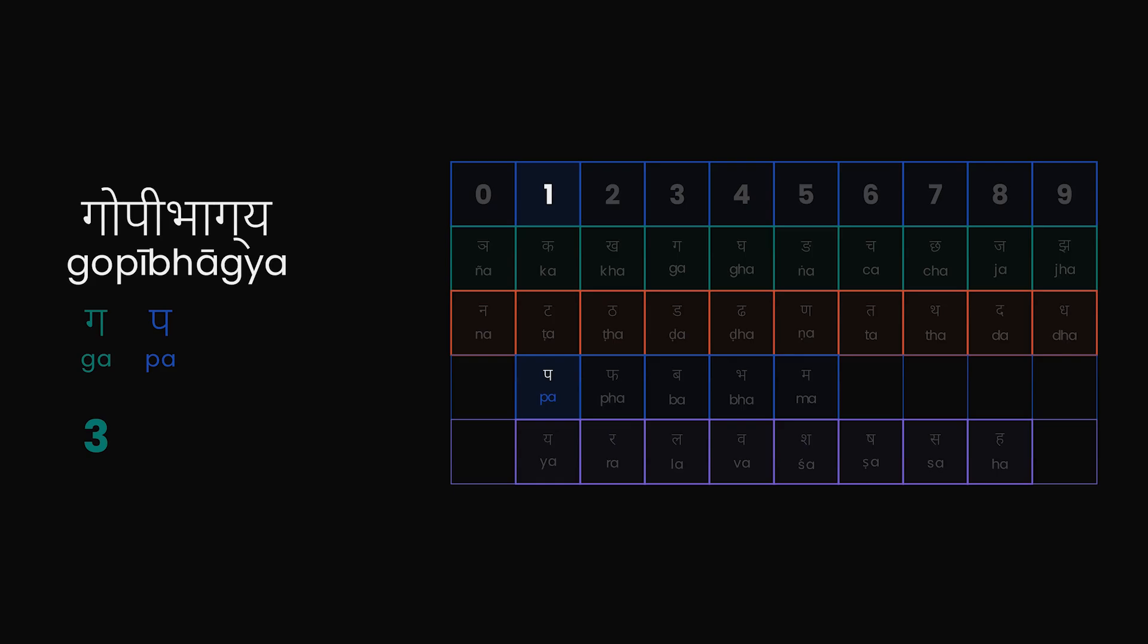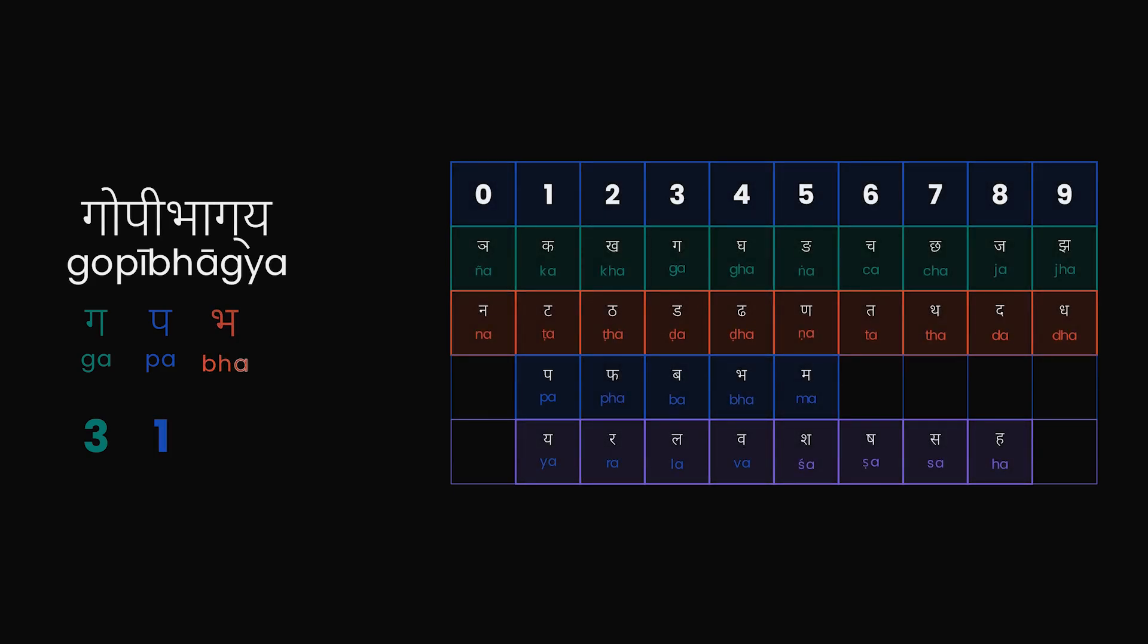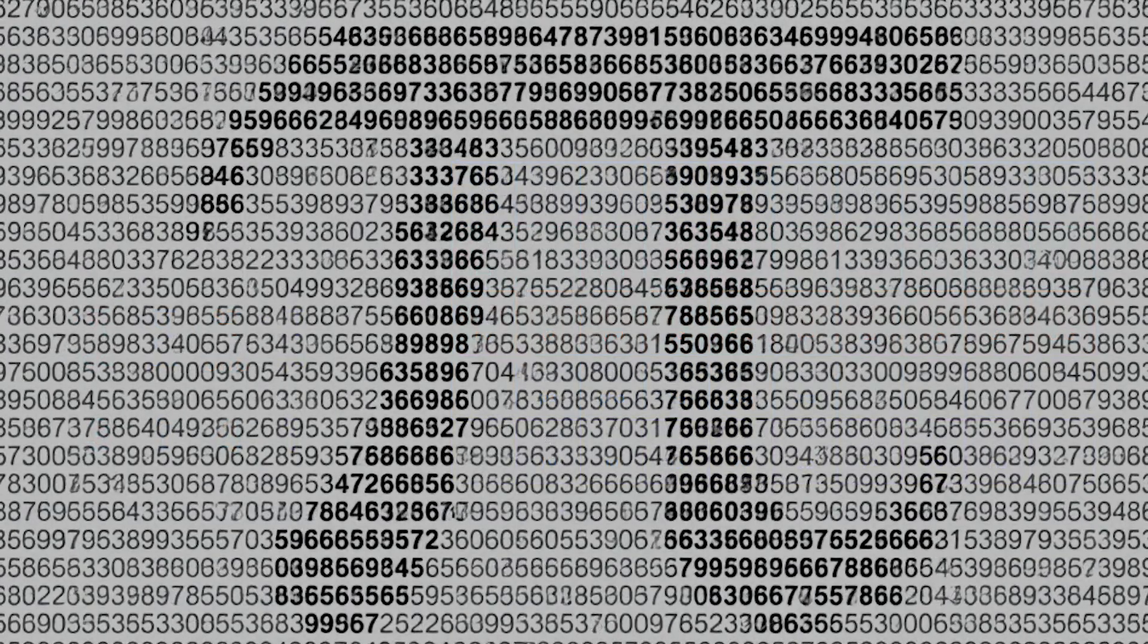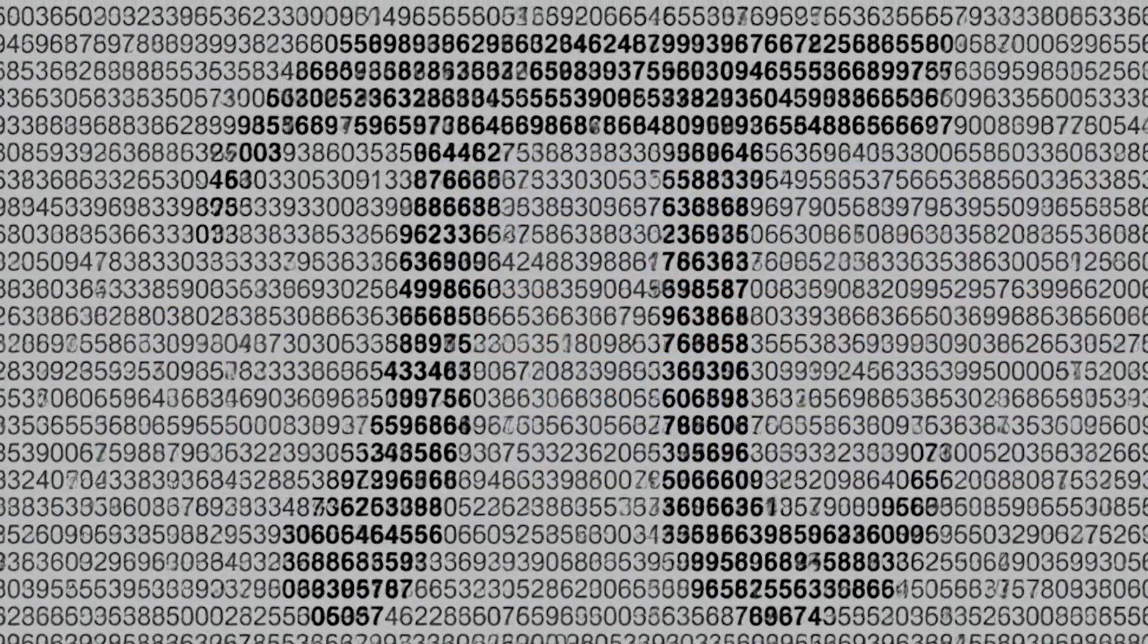Ga is 3, Pa is 1, Bha is 4, and Ya is 1. Wait a minute. 3, 1, 4, 1? That sounds familiar.